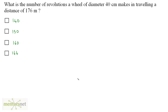What is the number of revolutions a wheel of diameter 40 cm makes in travelling a distance of 176 meters? We have been given the diameter of the circle: d is equal to 40. Now the radius is half of the diameter, so r will be equal to half of 40, which is 20 cm.